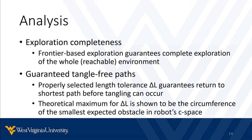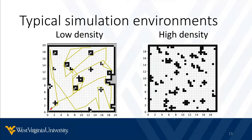Now, let's switch to analysis of the developed algorithm. Most importantly, this algorithm is complete from the exploration standpoint, since the frontier-based approach guarantees that either the entire environment will be explored or the part that can be physically reached with the tether. As for the tether being kept in a tangle-free state, a properly selected length-tolerance delta L would guarantee that the robot would return to the optimal tether configuration before any tangling has a chance to occur. We also show that the theoretical maximum for delta L is the circumference of the smallest expected obstacle in the robot's configuration space. For our simulations, we used a randomized environment generator to test the algorithm with both low- and high-density examples. The low-density figure also shows the total path the robot took to explore the environment while keeping the tether tangle-free at all times. The field of view of the robot was purposefully kept low to leverage the algorithm as much as possible.